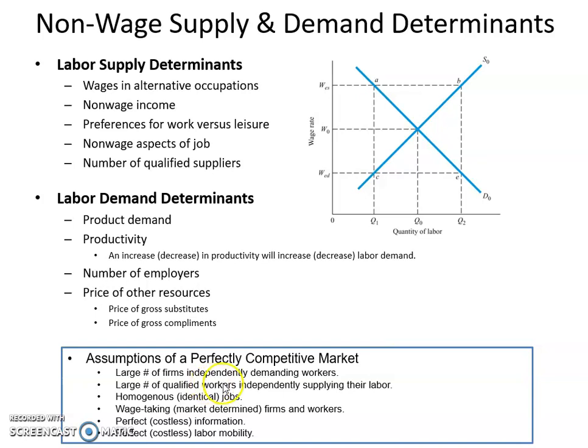The assumptions are as follows. There's a large number of firms independently demanding workers — the firms are not working together to create a collective demand, they're working independently when they make their hiring decision. There's a large number of qualified workers independently supplying their labor; the workers are not working together collectively to determine how much labor supply to create — they're making that decision individually. All jobs are identical and homogenous.